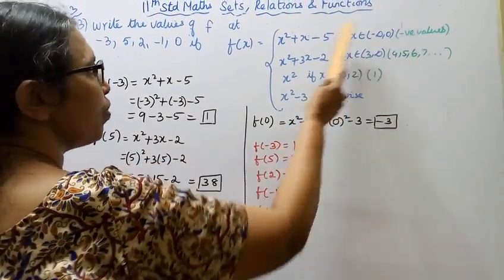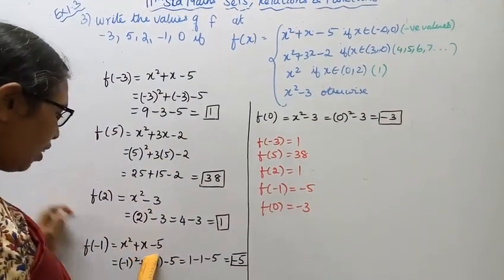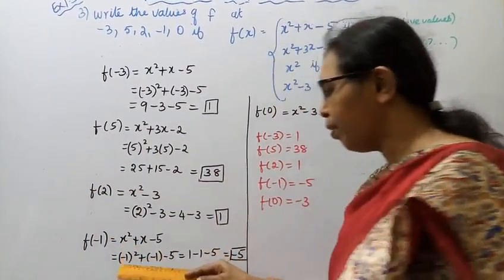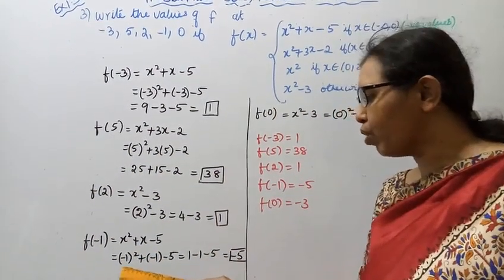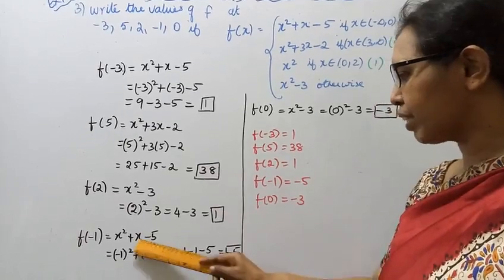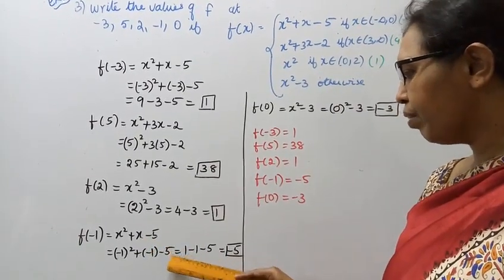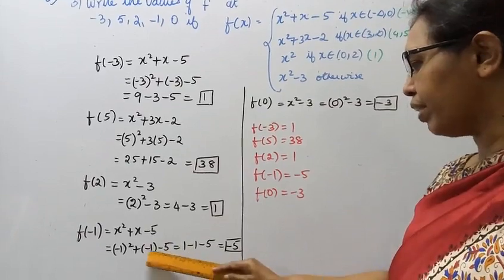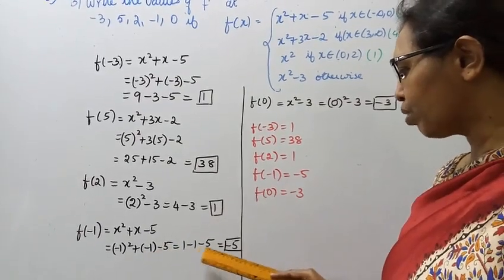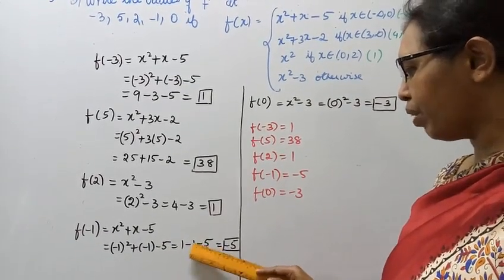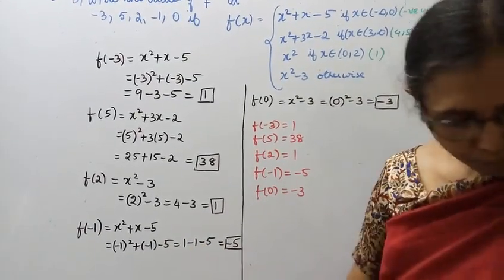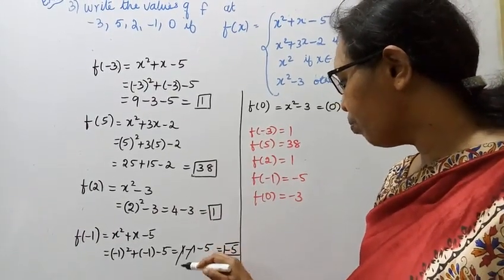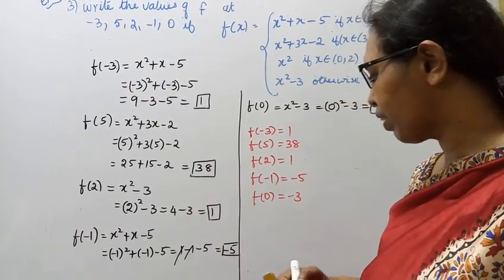f of minus 1: minus 1 is a negative value, so we use x squared plus x minus 5. Substituting x equals minus 1: minus 1 whole square plus minus 1 minus 5 equals 1 minus 1 minus 5. Plus 1 and minus 1 cancel, therefore that is equal to minus 5.